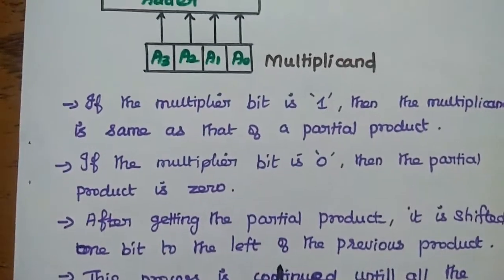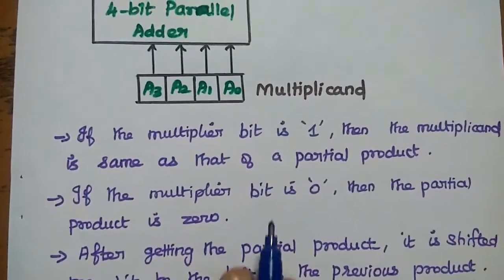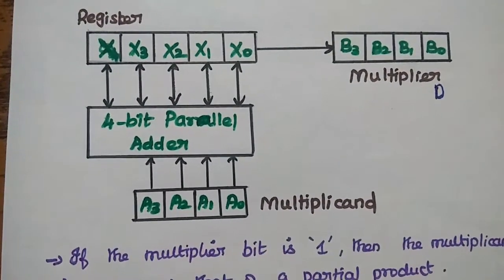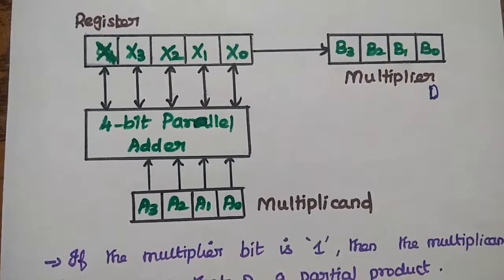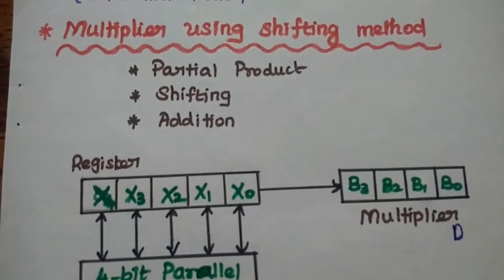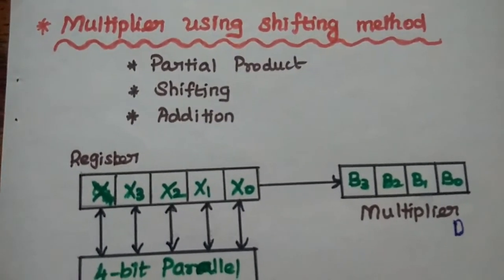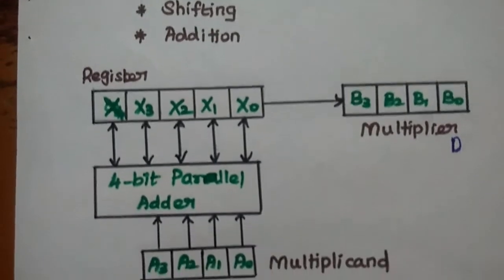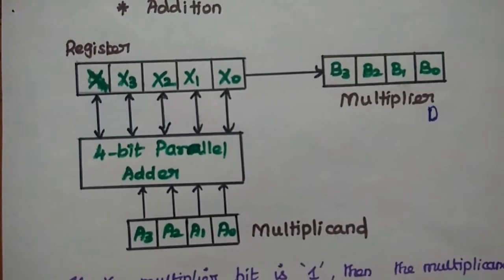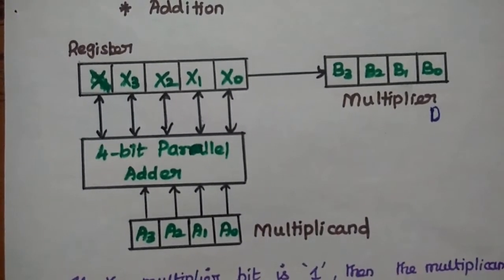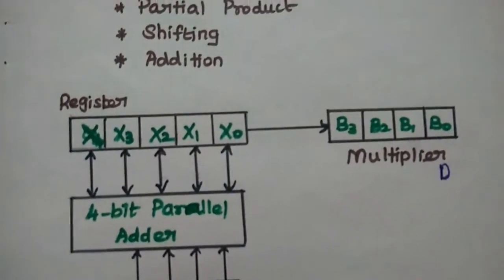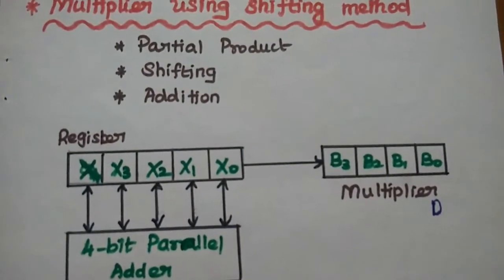Finally, we add all the partial products together to get the binary multiplication result. This is how we perform the multiplication operation on binary values. The multiplier using shifting method is a very simple method and requires less hardware, so its complexity is very less. These are the major advantages of the shifting method.